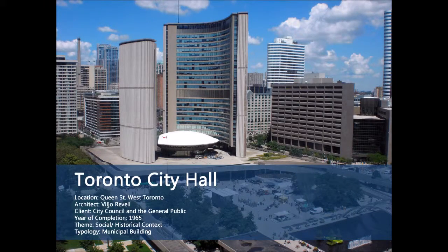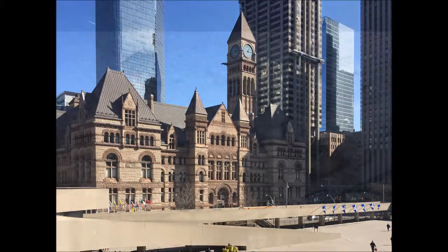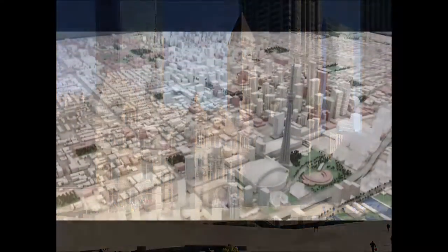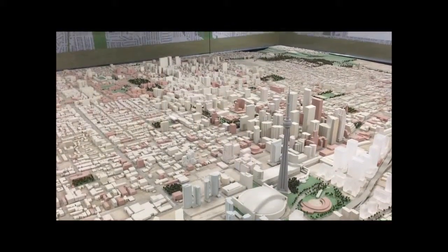Toronto City Hall, located on Queen Street West, has become an iconic symbol of the city. Towards the 1940s, it became apparent that there was a lack of space to house the bureaucracy in what is now the old City Hall building. This was due to the rapid rate at which Toronto was expanding.